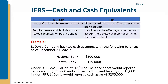If a company writes out checks for more than the balance in its checking account, that creates a negative balance. U.S. GAAP says don't show a negative balance in your checking account — the negative balance should be shown as a liability, because you don't have the money and you still owe it. IFRS allows these overdrafts to be offset against other cash accounts.